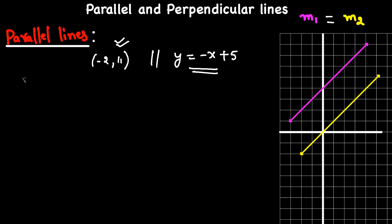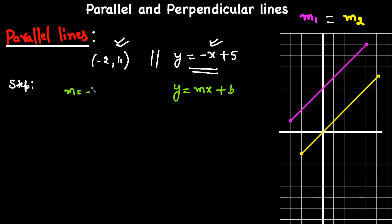We're going to follow three steps. Step 1: find the slope of this equation. Since the new line is parallel to the given line, their slopes are equal. Comparing with the standard slope-intercept form y = mx + b, the slope of the given line is m = -1. The equation we are going to find also has the same slope because both lines are parallel.